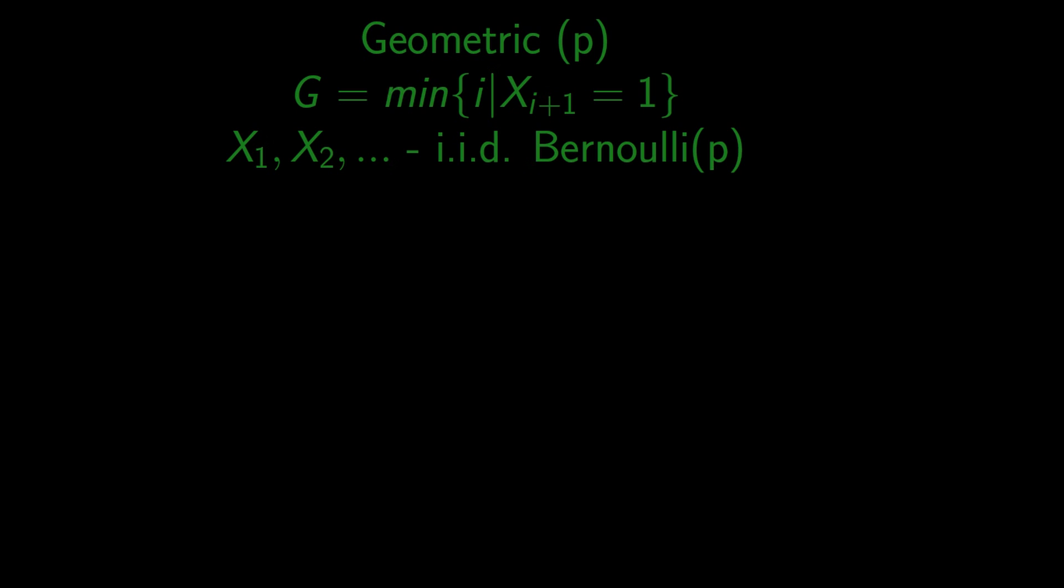The earliest we can get a success in this experiment is the first coin toss, so the lowest possible number of failures is zero. The probability that we get success immediately is the same as the probability of success in one trial, which is p.